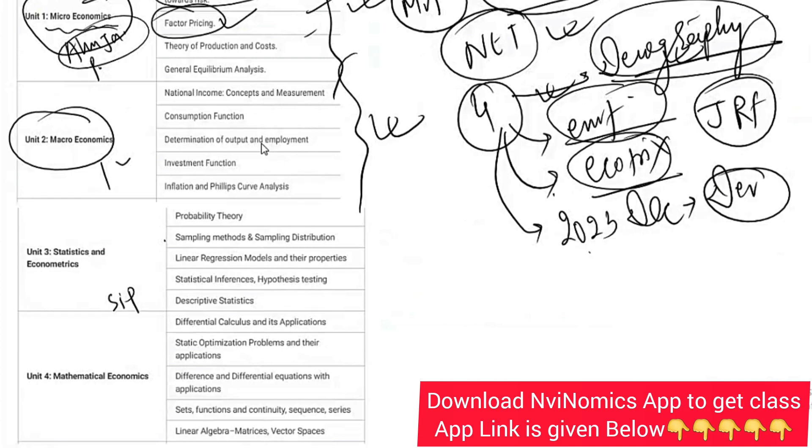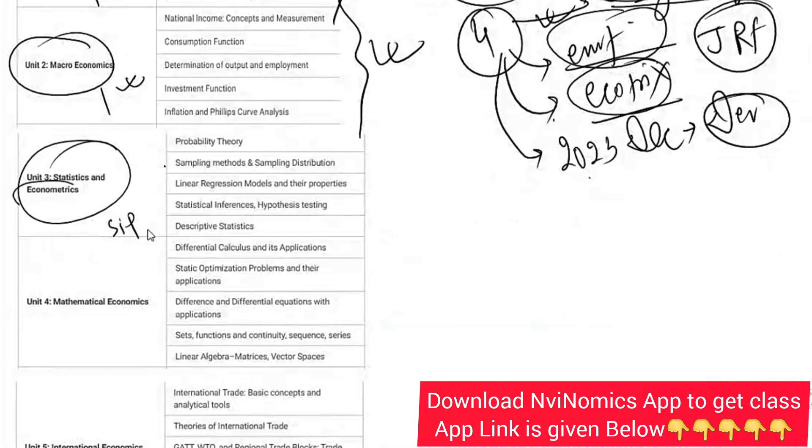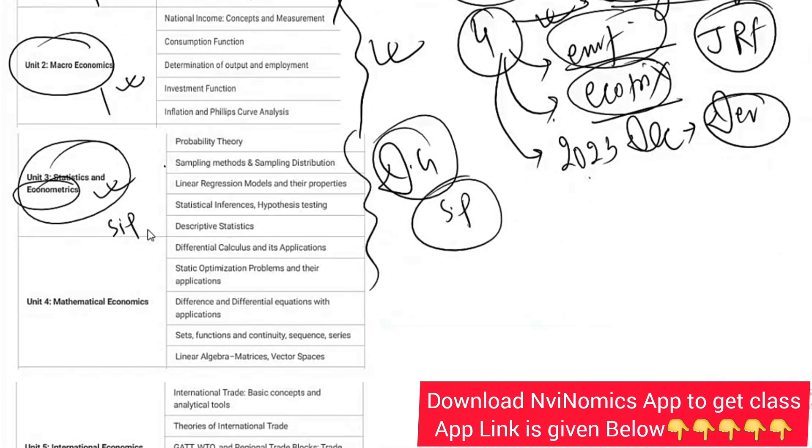Then comes macro - A to Z CUET almost. People who have already prepared can add value to that and prepare stats and econometrics. For econometrics, Damodar and Gujarati you can refer. For statistics, S.P. Gupta is more than enough. These topics we will be covering, no need to worry.